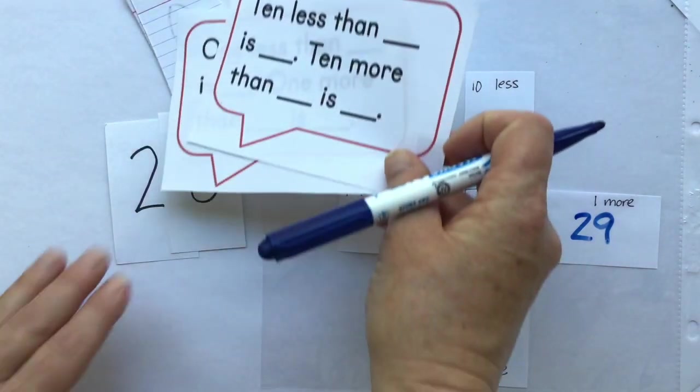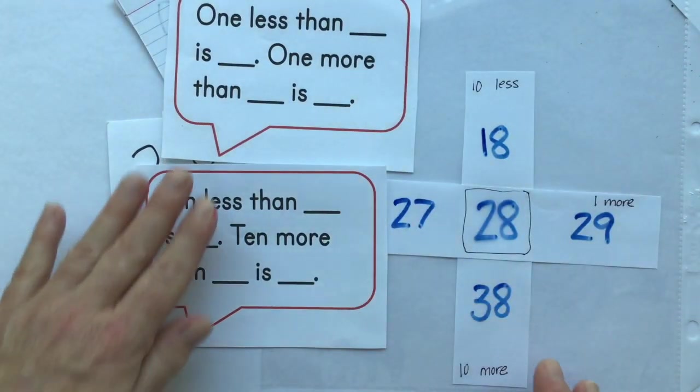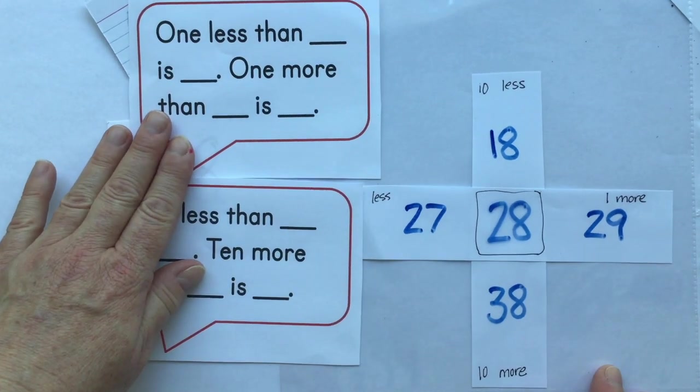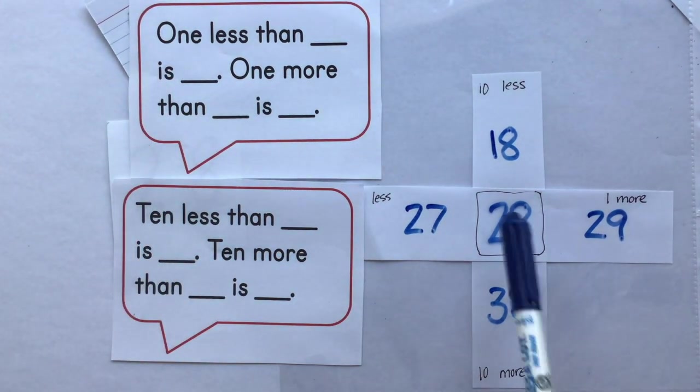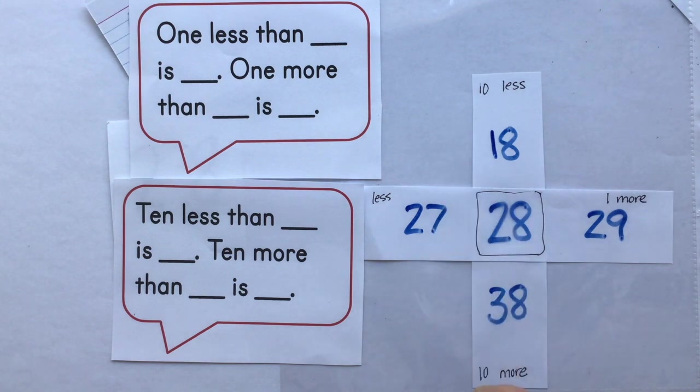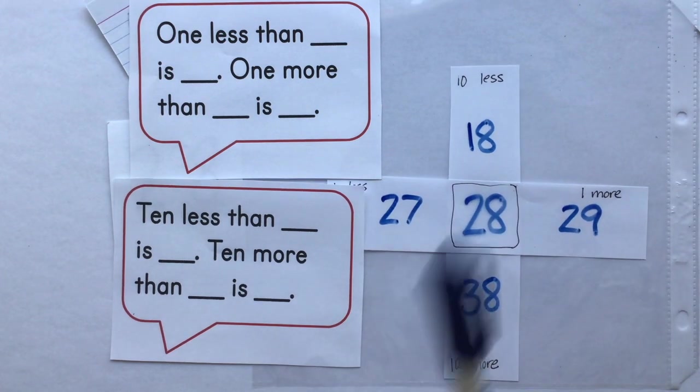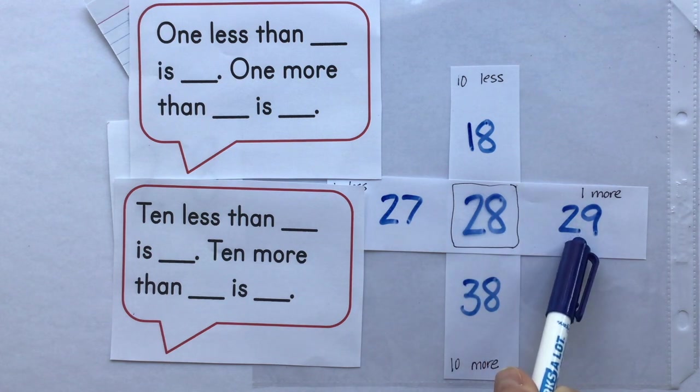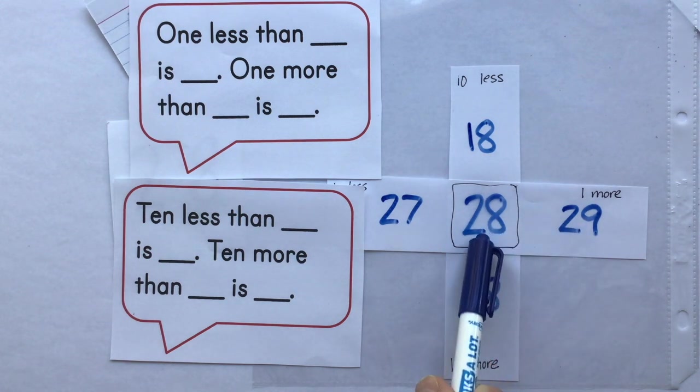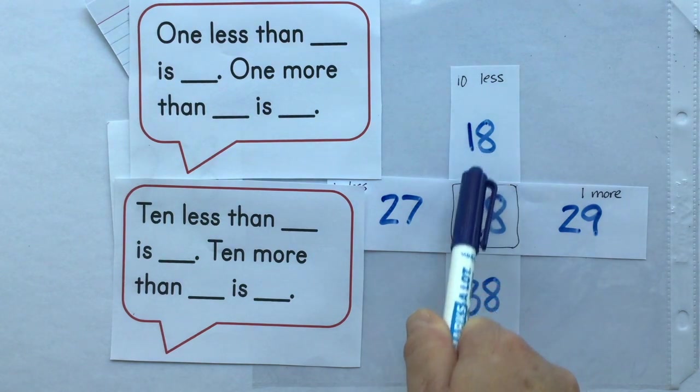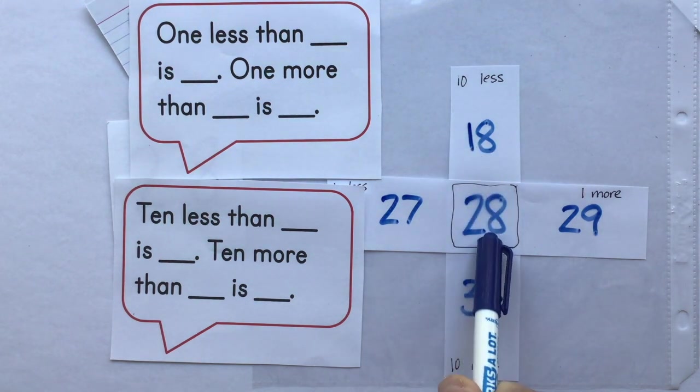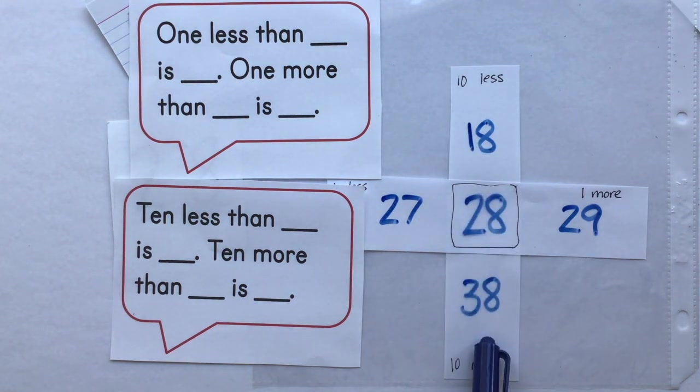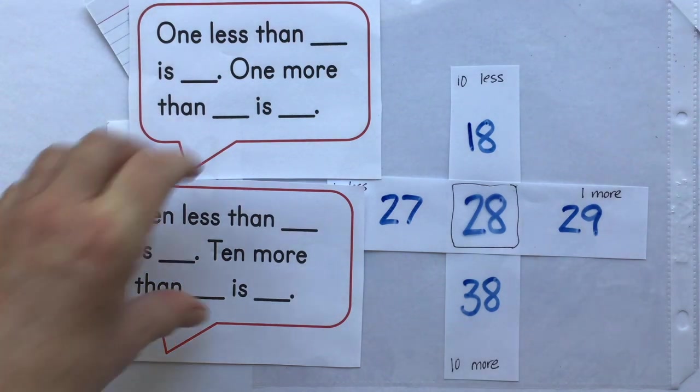Let's get our sentence frames up. And we're going to say this. One less than 28 is 27. One more than 28 is 29. 10 less than 28 is 18. 10 more than 28 is 38.